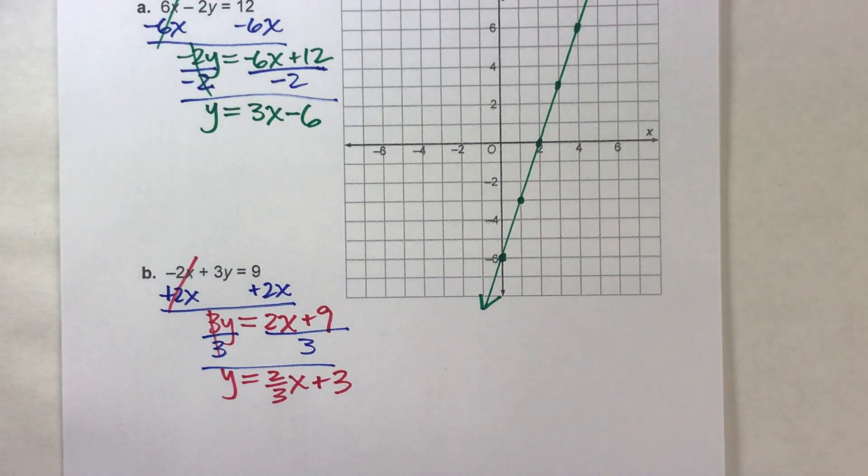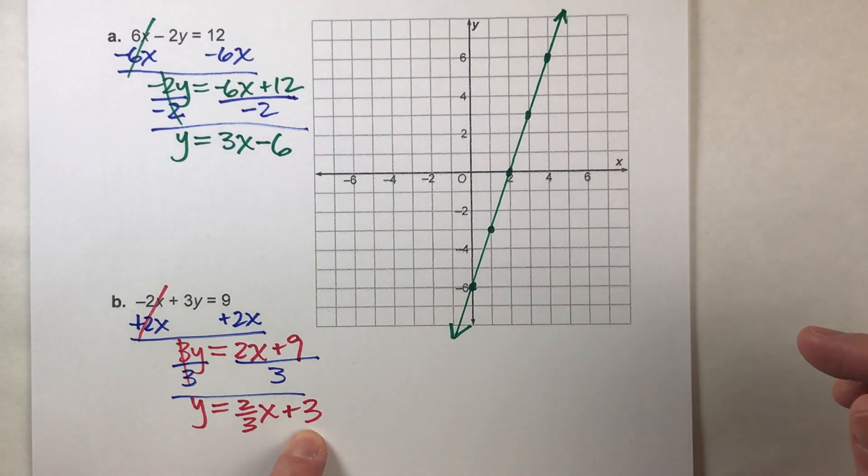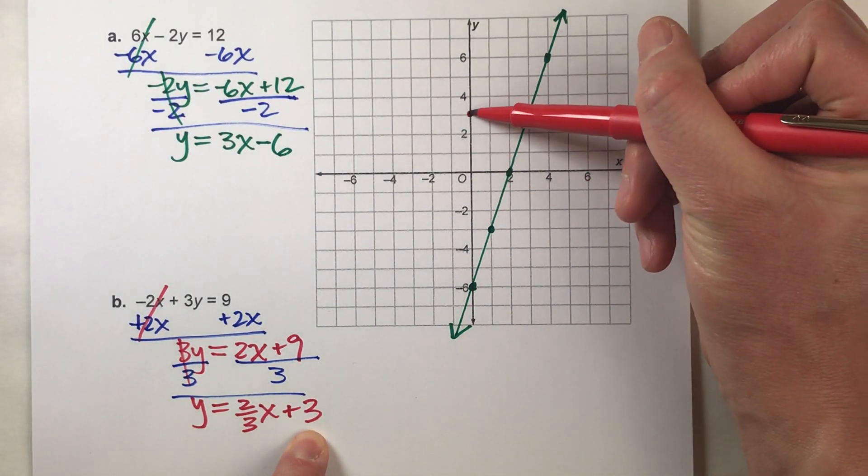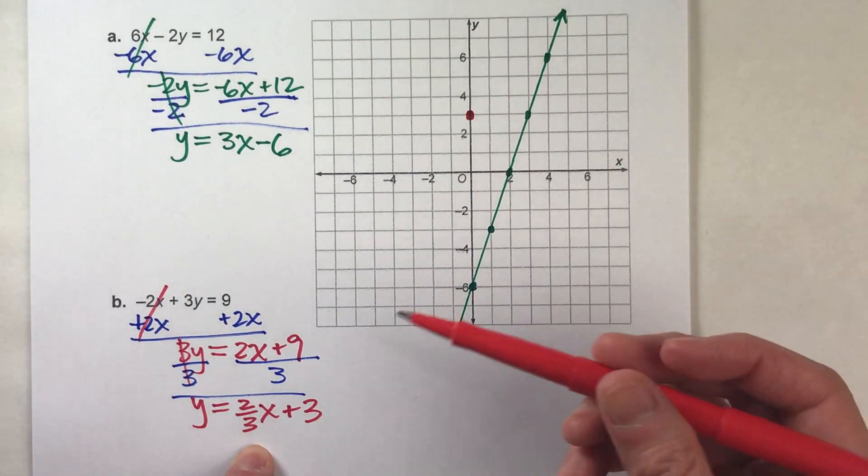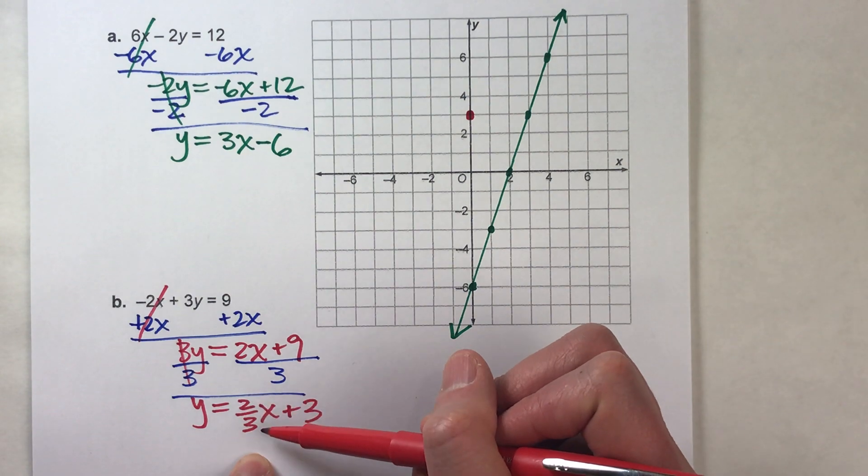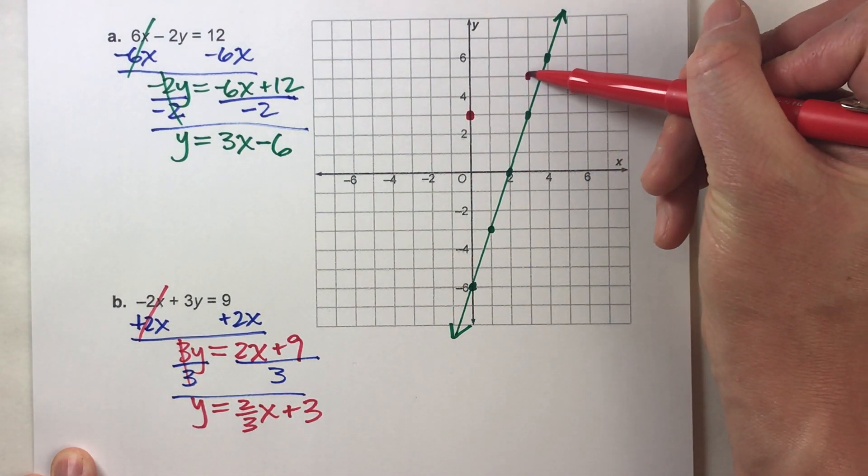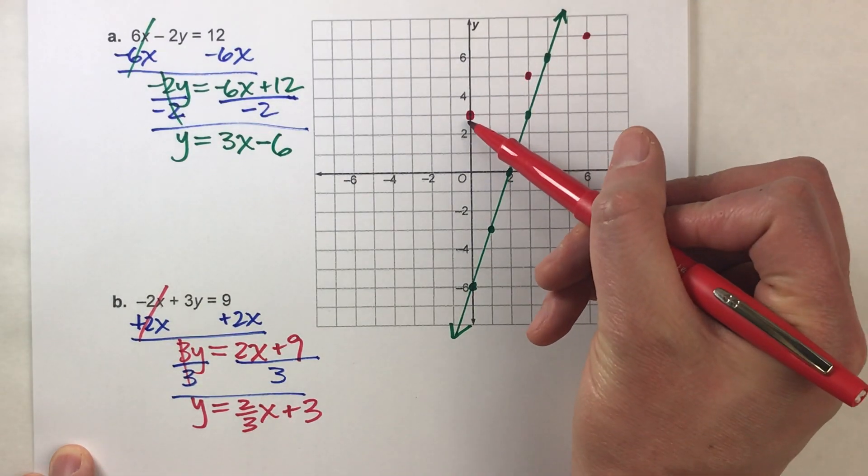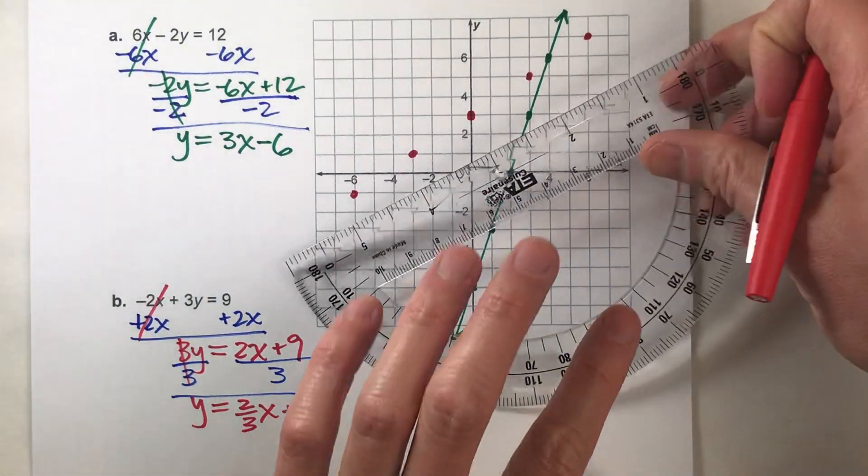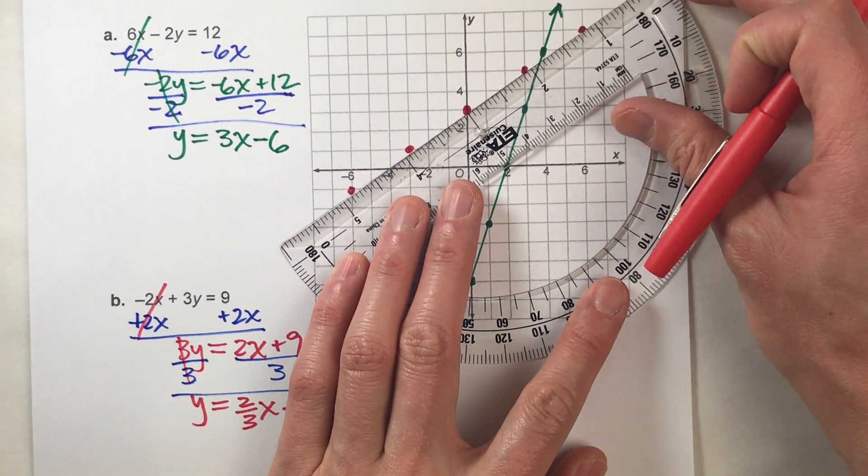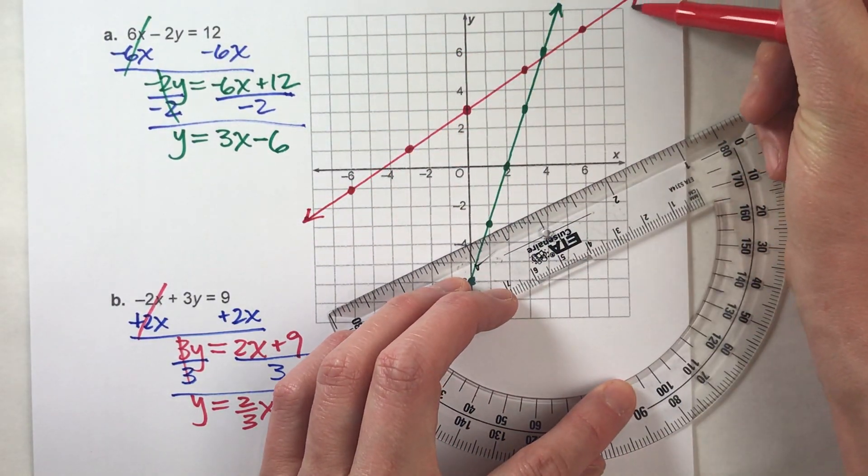Alright, so notice I've got it in slope-intercept form now, so now I can easily graph this. My y-intercept is 3, so 3 on the y-axis, and my slope, because I kept it as a fraction, I can use this as my slope pretty easily. Rise over run, up 2, right 3, up 2, right 3, up 2, right 3, and then I'll continue the pattern the other way. And when I draw in my line, there it is.